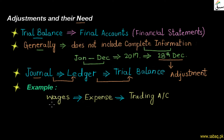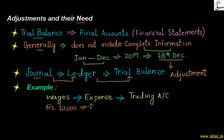Let us take the example of wages. The wages expense is written in the trading account, which shows gross profit or gross loss. Suppose we know the wages expense is Rs. 10,000. We have recorded this Rs. 10,000 — in the journal, in the ledger, and then in the trial balance. We recorded wages expense of Rs. 10,000. But by 28th December, the last date of the financial year, we need to complete the financial statements.